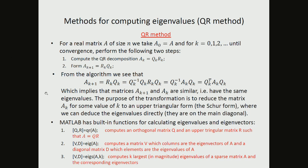Why does this work? Starting from A_{k+1} = R_k Q_k, we multiply from the left by Q_k inverse Q_k, which gives the identity. Since Q_k R_k equals A_k, and Q is orthogonal so Q-inverse equals Q-transpose, we get A_{k+1} = Q_k^T A_k Q_k. This shows that A_k and A_{k+1} have the same structure — they are similar matrices — which means they have the same eigenvalues. As iterations continue, A_{k+1} becomes triangular, and we read off the eigenvalues.